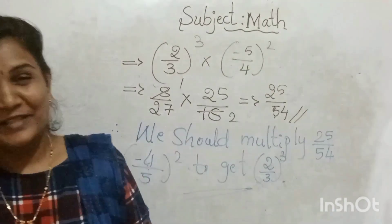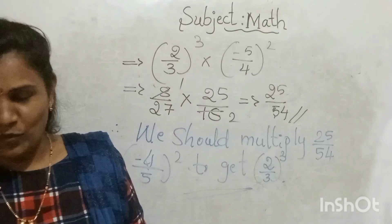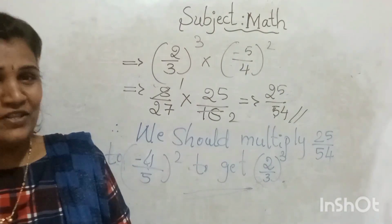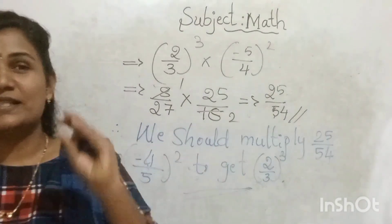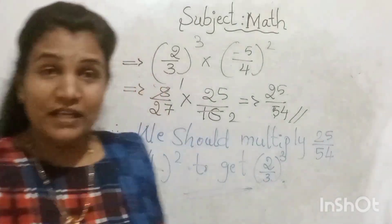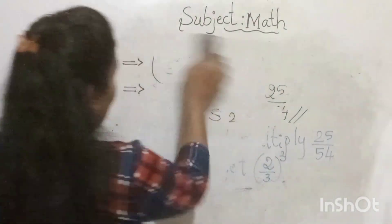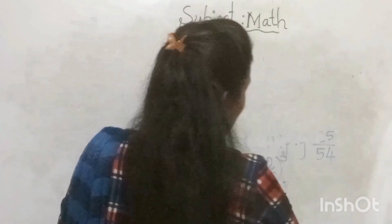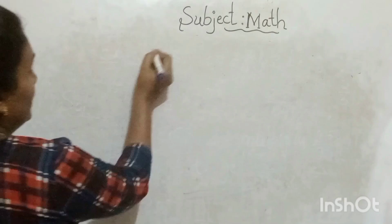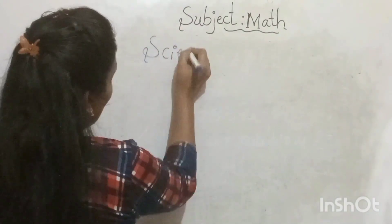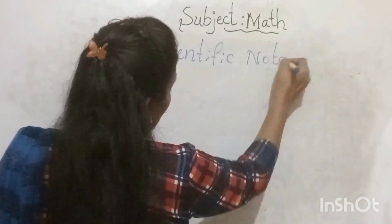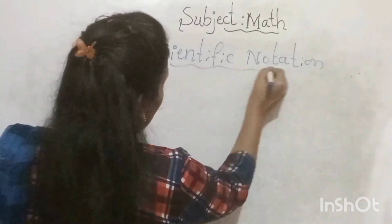Now we will move to the important concept: scientific notation. What is scientific notation? Where do we use it? If we want to deal with very large or very small numbers, we represent the number using scientific notation. There are three key points for how to express numbers in scientific notation.